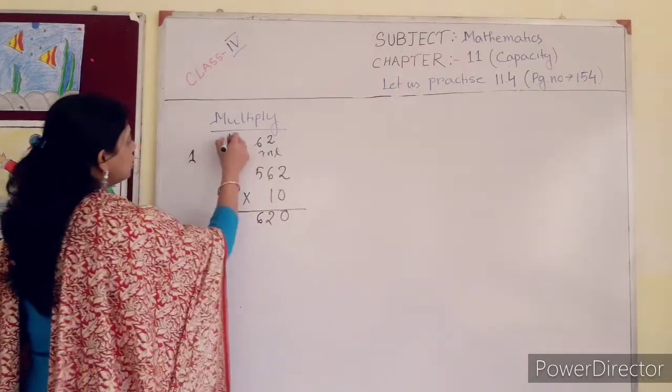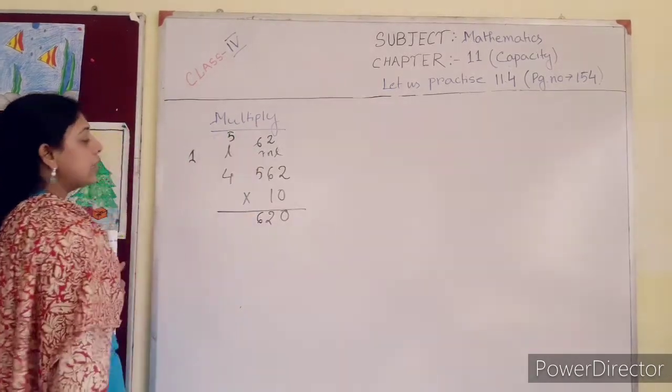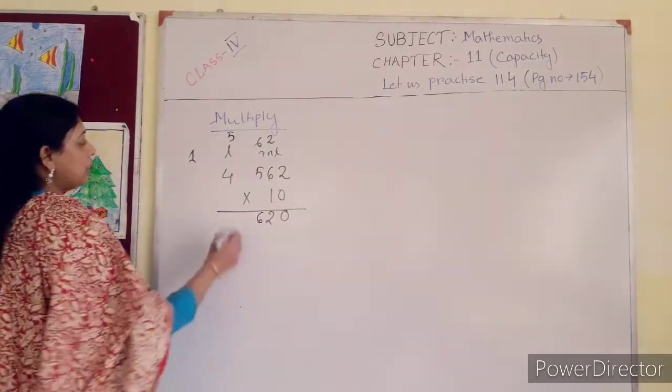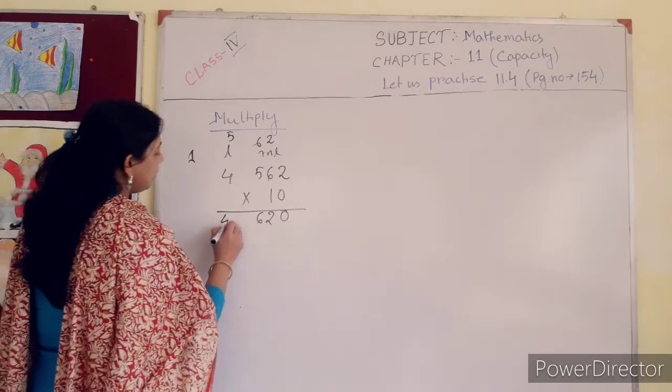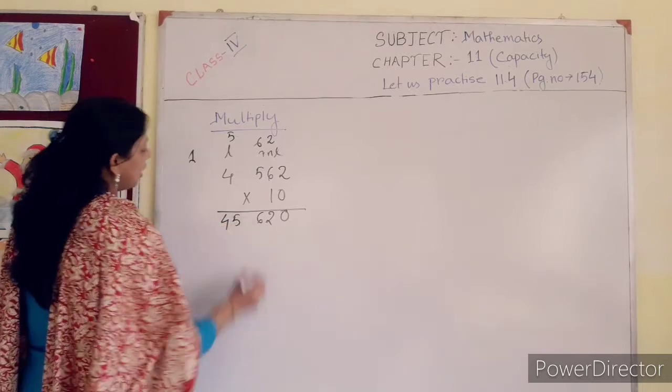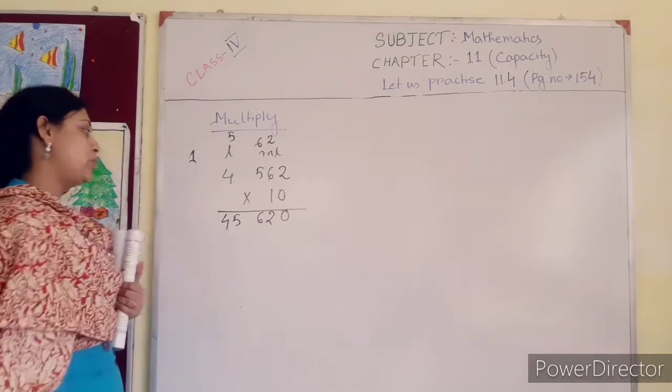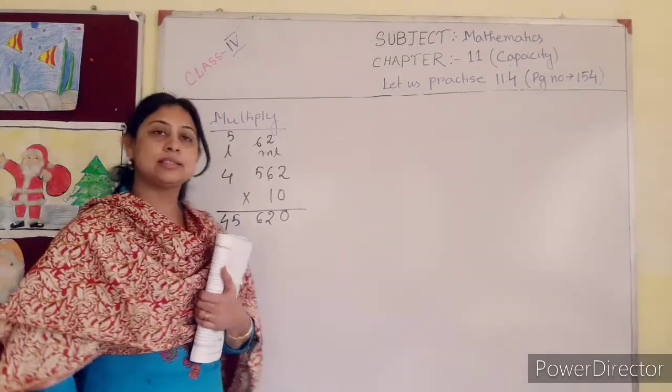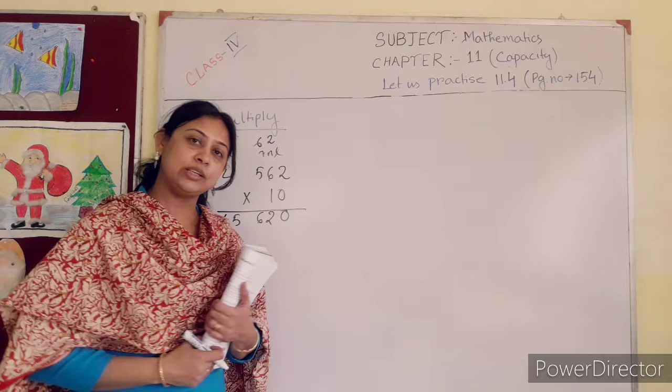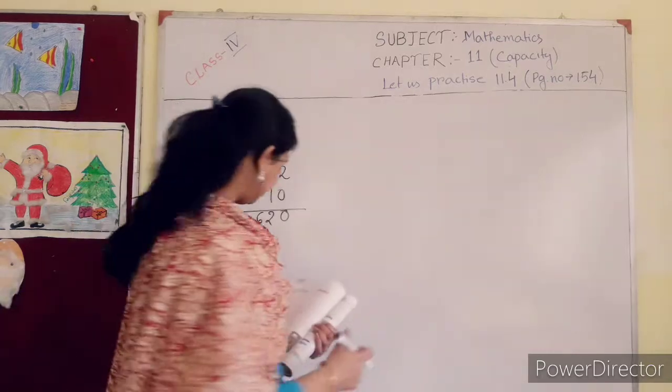5 is in your hand. 10 into 4 is 40. 40 plus 5 is 45. So your answer will be 45 liter, 620 milliliter.